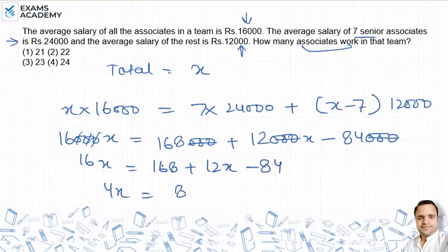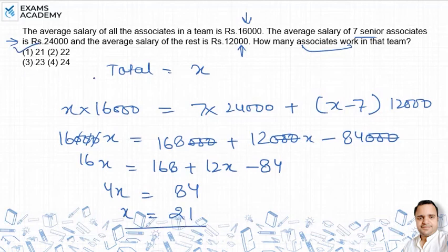168 minus 84 करेंगे तो value आएगी 84, और x की value निकलेगी 21. So the answer is option 1: x = 21, which is the total number of associates working in that team.